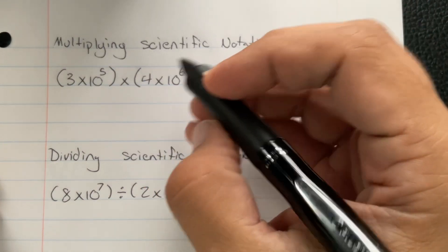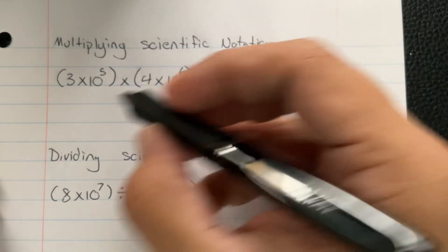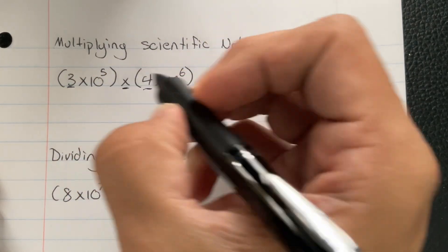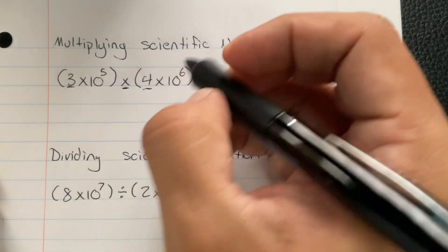All right, so let's multiply scientific notation. When you multiply scientific notation, the front numbers are going to do exactly what the middle says. 3 times 4 is going to give us 12.